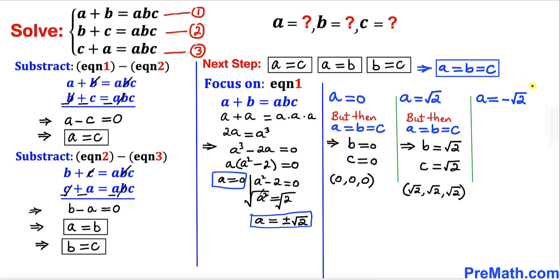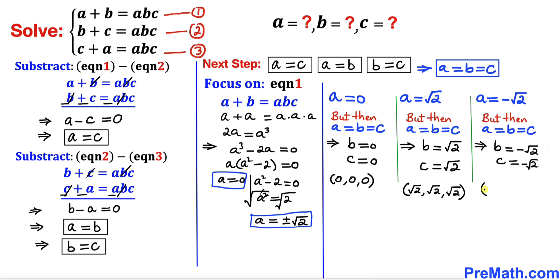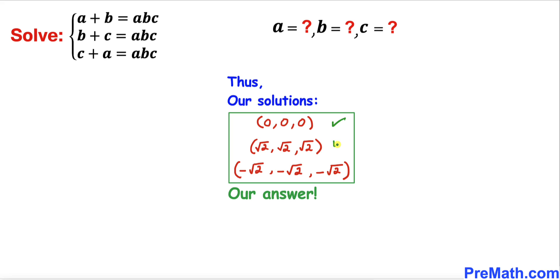Finally, for the third scenario, when a equals negative square root of two: since a equals b equals c, b equals negative square root of two and c equals negative square root of two as well. So the solution set is (−√2, −√2, −√2). Thus we have three solutions in total. Thanks for watching and please don't forget to subscribe for more exciting videos!